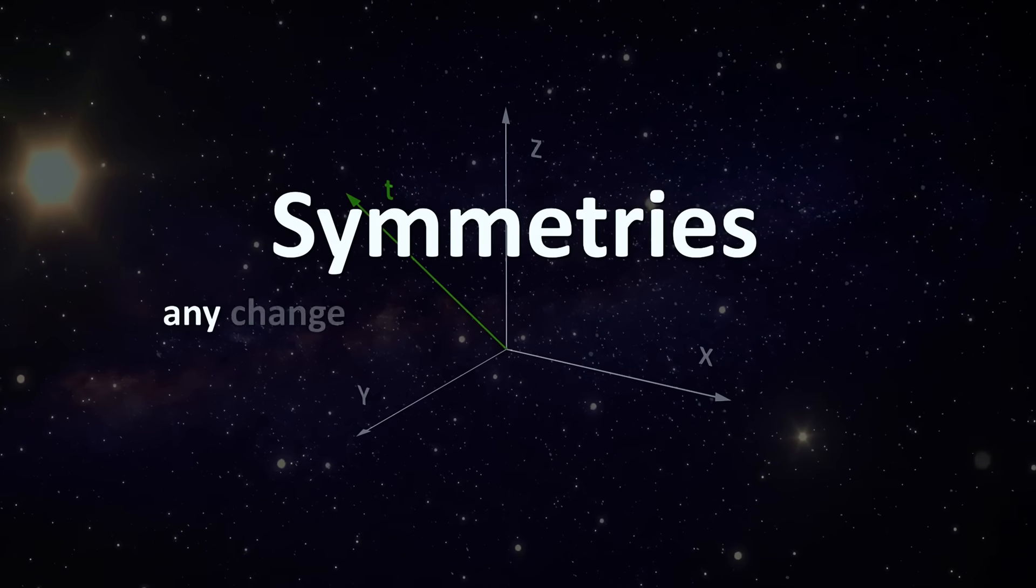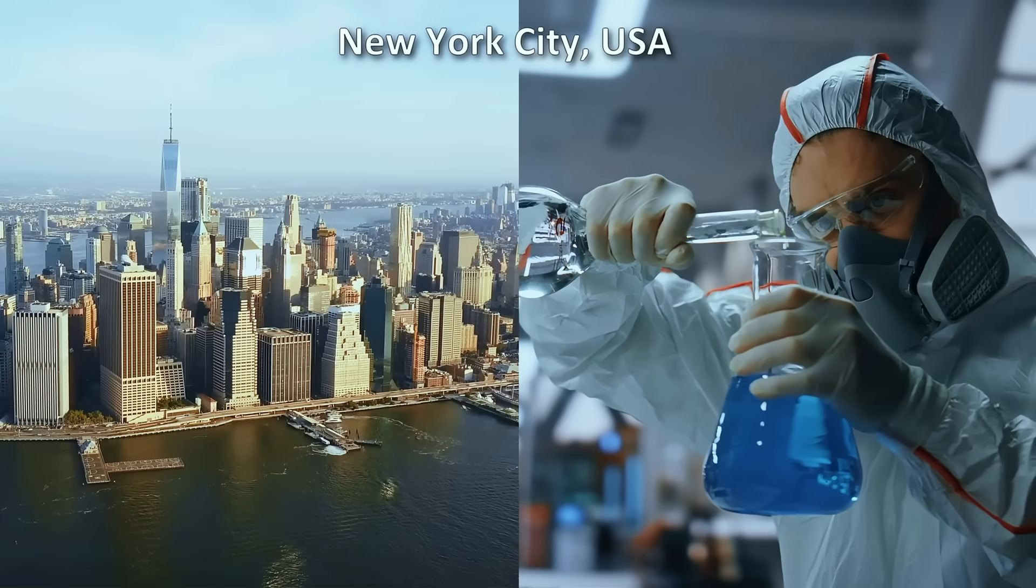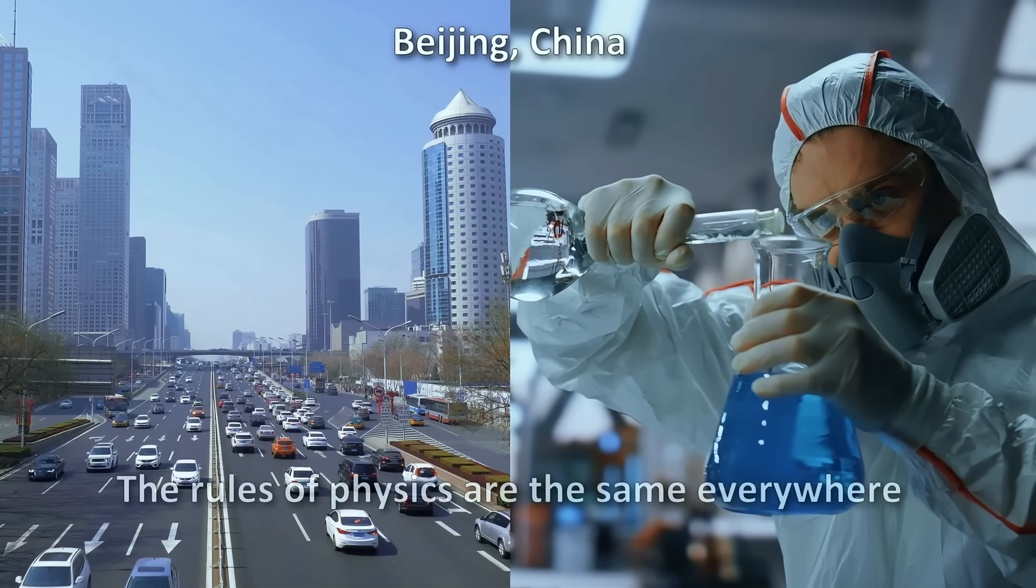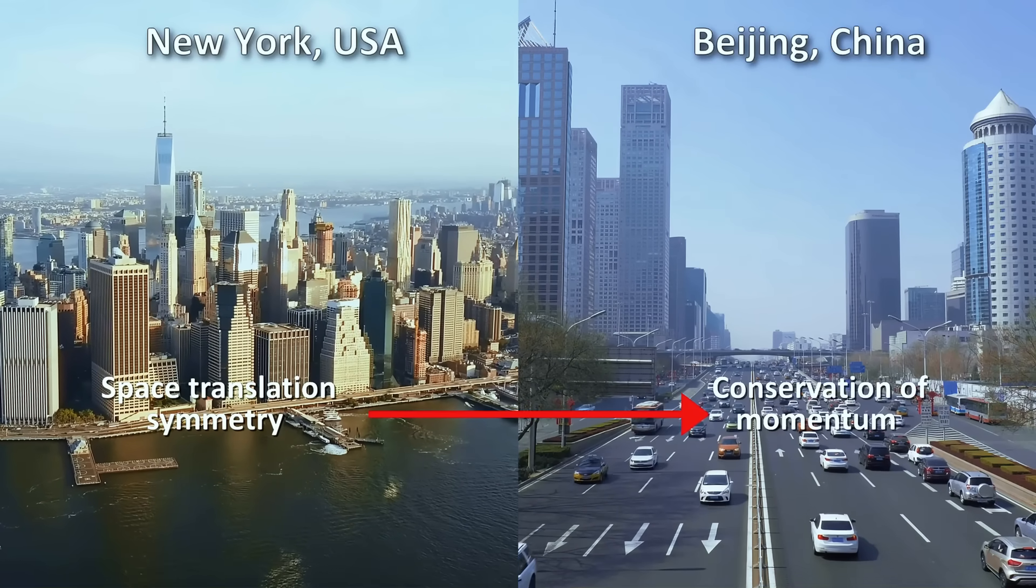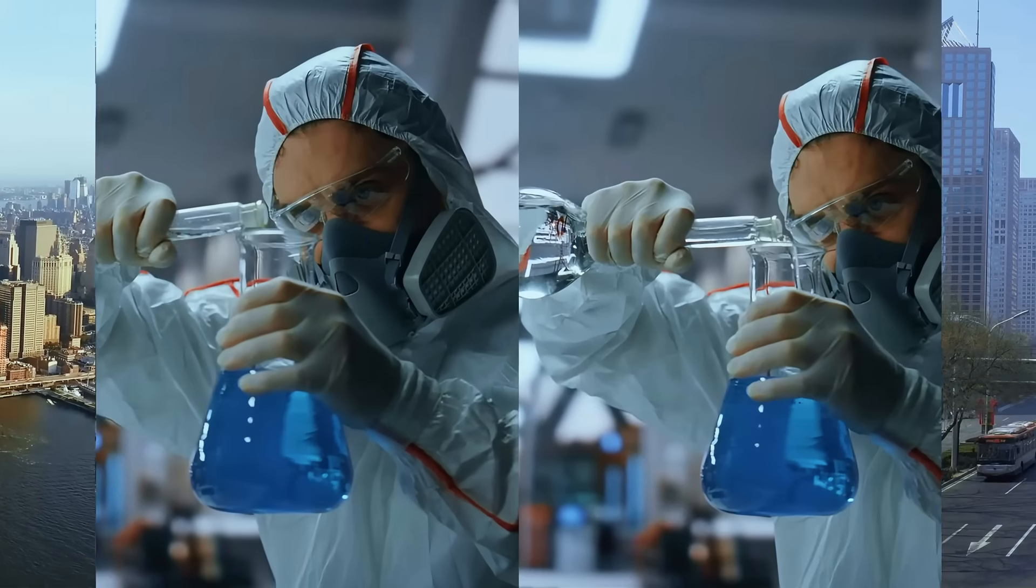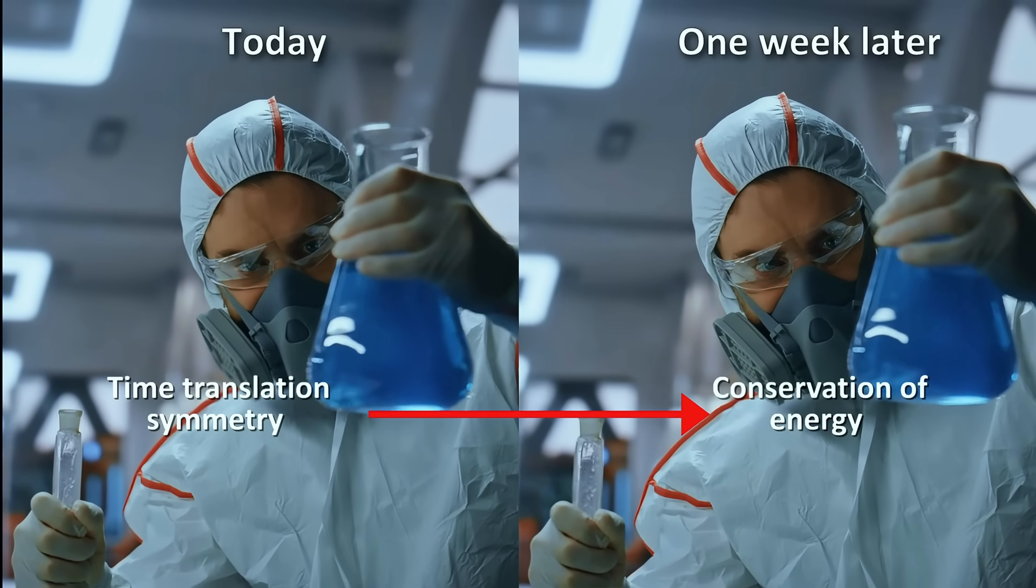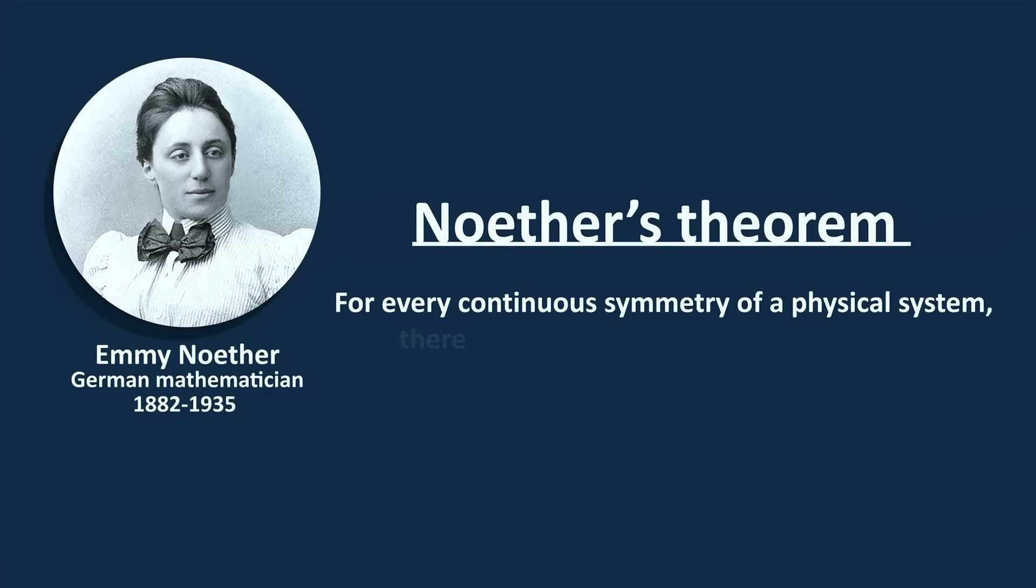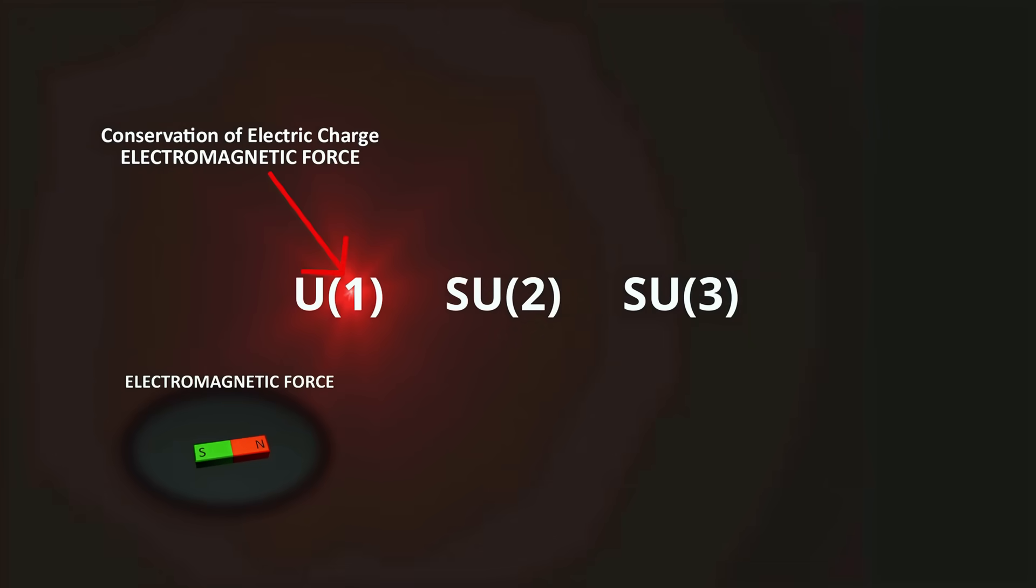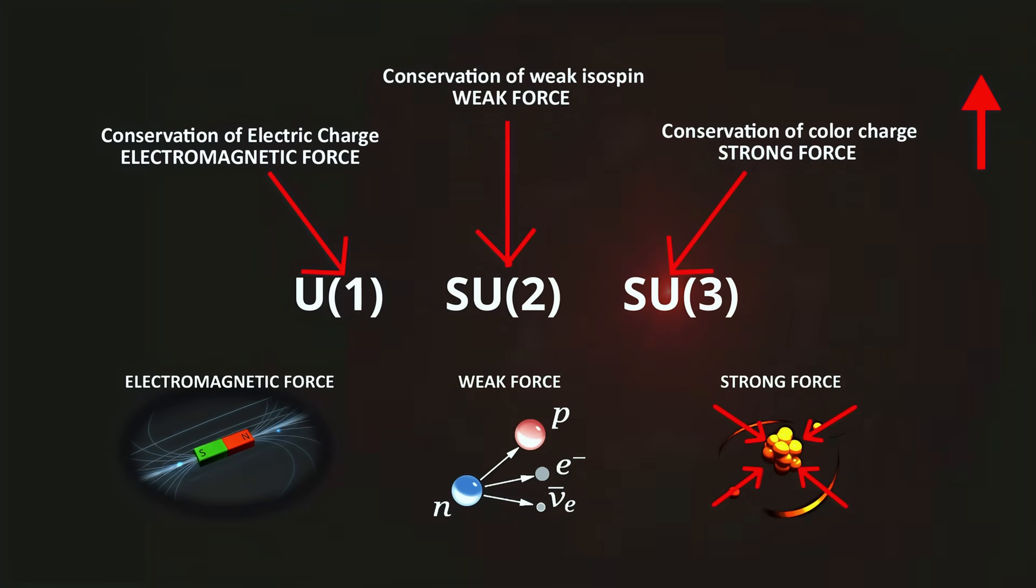A symmetry is any change of perspective or variables that leaves the outcome of a system unchanged. For example, the laws of physics don't care if you do an experiment in New York or Beijing. The rules are the same everywhere. This spatial translation symmetry results in conservation of momentum. Similarly, time translation symmetry means the rules stay the same whether you do the experiment today or next week. This symmetry results in conservation of energy. These connections are formalized in Noether's theorem, and they explain why certain totals never change in isolated systems. These symmetry principles are crucial because respecting or breaking them constrains and predicts the particles and forces we find in nature.